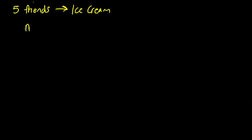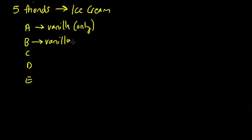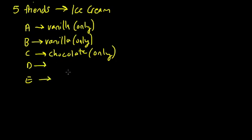Well, let's call our friends A, B, C, D, and E. Let's say friend A wants vanilla, and so does friend B, and that's all they want. So they only want vanilla. They want nothing else. And let's say that friend C wants chocolate, and that's all they want. But let's say friends D and E, they want both vanilla and chocolate.